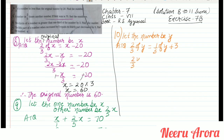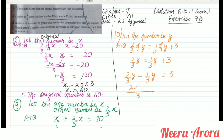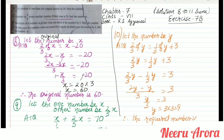So 2/3 y equals 1/3 y plus 3. Separating variables and constants: 2/3 y minus 1/3 y equals 3. LCM is 3, so 2y minus y equals 3, giving y by 3 equals 3. Therefore y equals 9. The required number is 9.